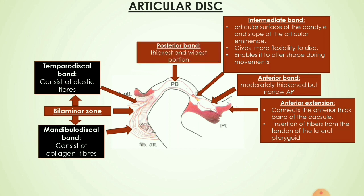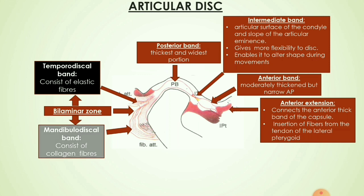Next is the posterior band, which is the thickest and widest portion of the articular disc. Lastly, there is the bilaminar zone, called so because it has two fibrous laminae: one is the temporodiscal band consisting of elastic fibers, and the other is the mandibular disc band consisting of collagen fibers, which attaches at the neck of the condyle.